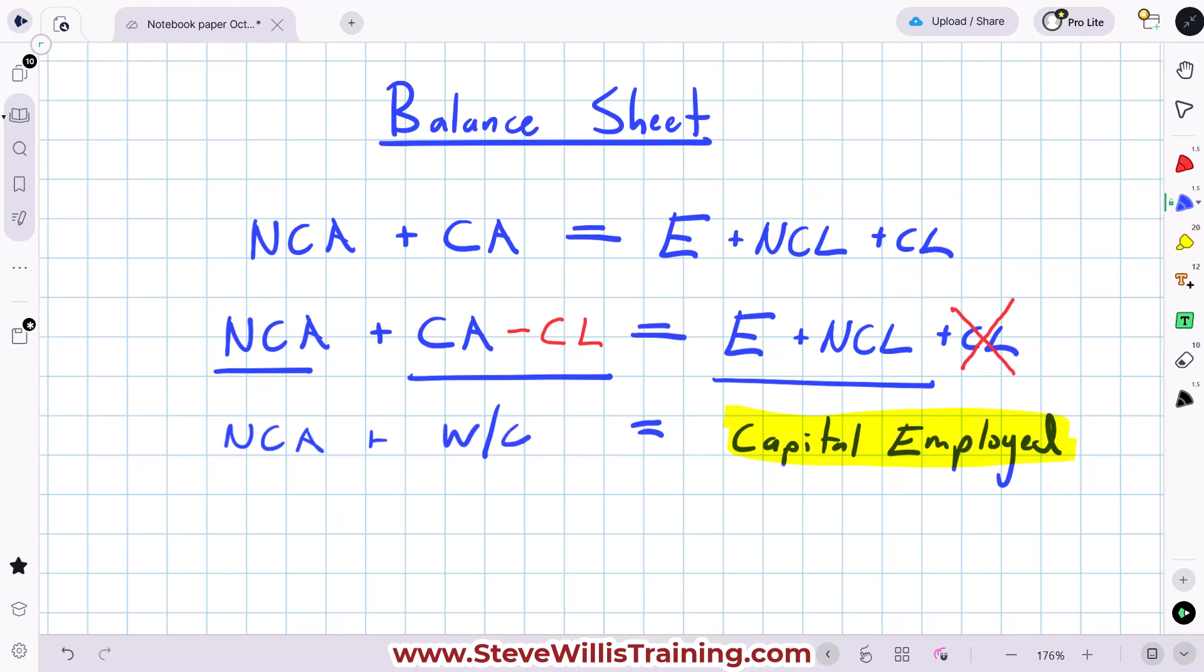Or we could also say it this way, and the books often say this. We could say our total assets, which would be this and this, minus current liabilities. So that's how we arrive at two formulas for calculating capital employed.